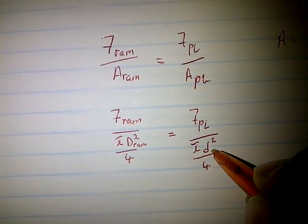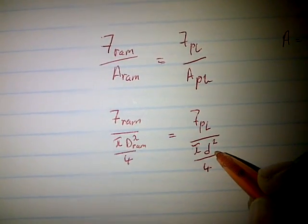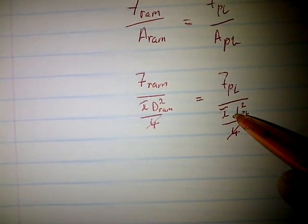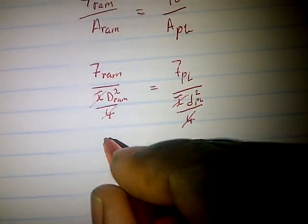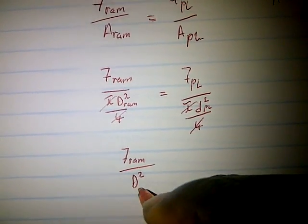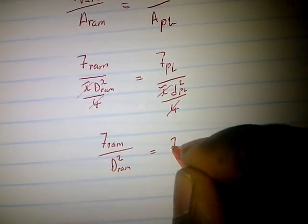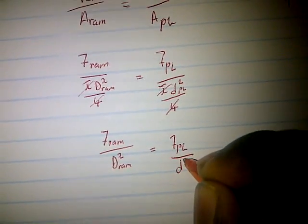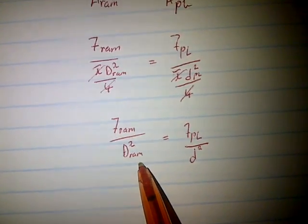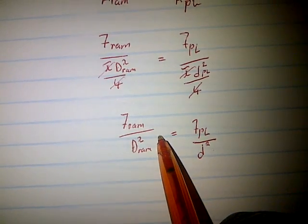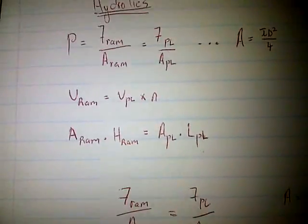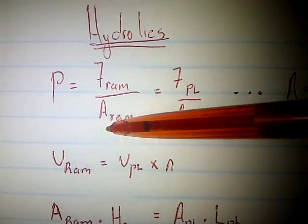Because we have a 4 on one side it cancels with the 4 on the other side, and π cancels with π on the other side. We are left with: force of the ram divided by D² (diameter of the ram squared) equals force of the plunger divided by d² (diameter of the plunger squared). This is the simplified version of the original formula from the formula sheet.